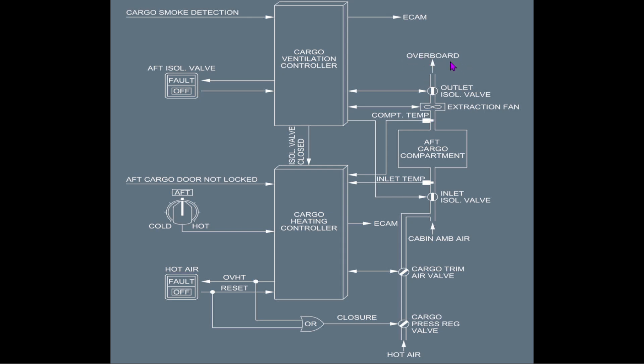Gibt es Unterschiede bei der Overboard-Situation zwischen vorderem und hinterem Gepäckraum? Ja. Für den vorderen Gepäckraum benutzen wir ein Outlet Valve und die Luft geht darüber raus. Für den hinteren Gepäckraum haben wir hinten im Flugzeug bereits das große Outflow Valve – nicht Outlet, Outflow Valve –, das für die Pressurization genutzt wird. Da macht es Sinn, keine extra Klappe anzubauen, sondern dieses zu benutzen. Also: hinten geht die Luft über das Outflow Valve über Bord, vorne über das Outlet Valve.